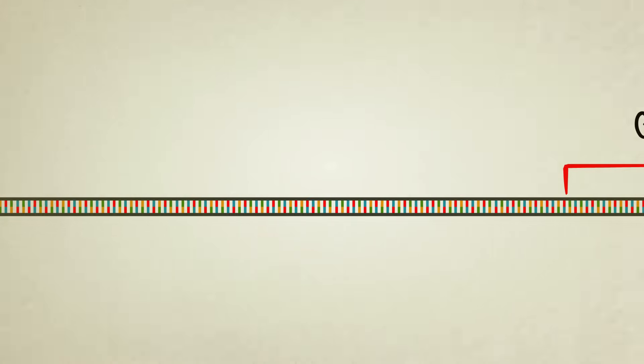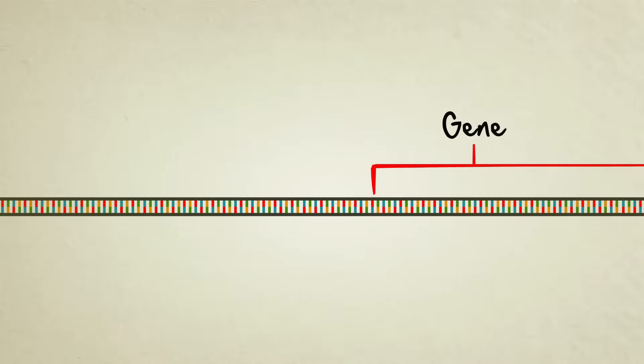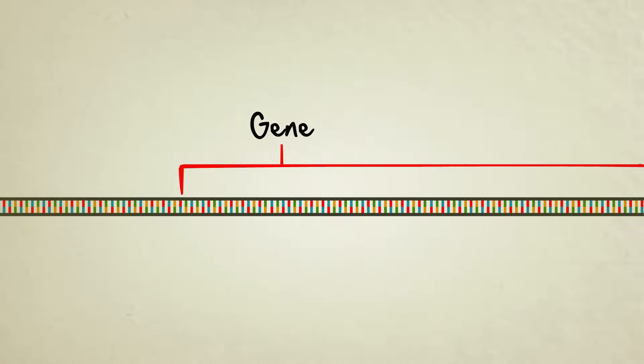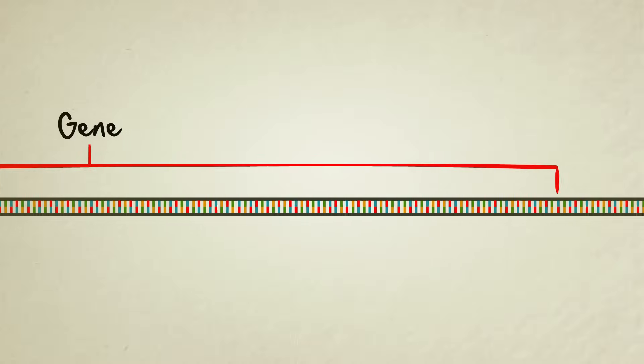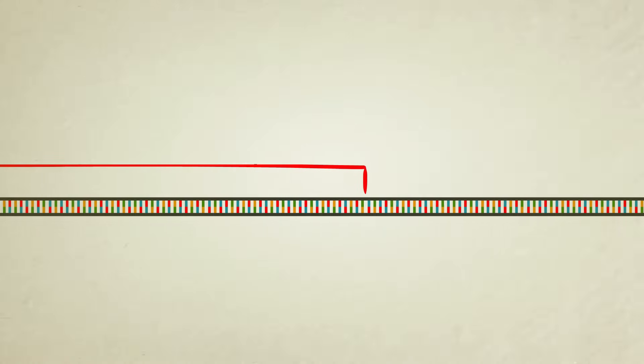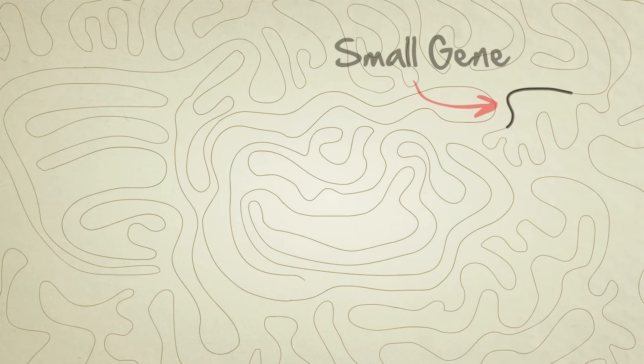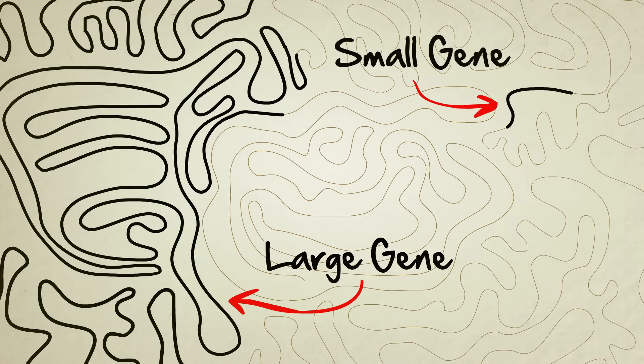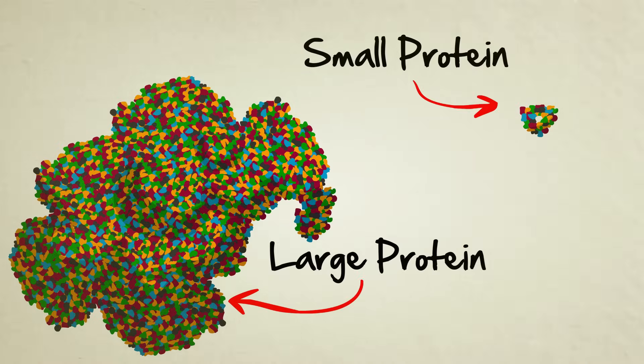A single strand of DNA contains thousands of genes or unique protein recipes. Humans have roughly 20,000 altogether. Some genes are small, only about 300 letters long, others are well over a million. The length and sequence of a gene determine the size and shape of the protein it builds. The size and shape of the protein determine the function that protein will have inside the body.